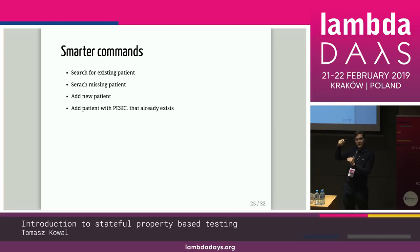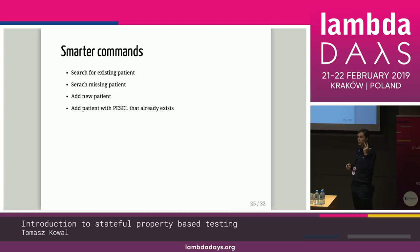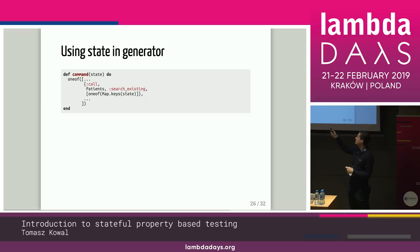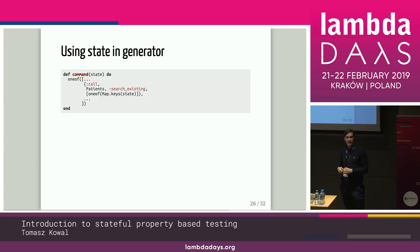There are tricks to make sure we actually test what we want with such a stateful system. We extend the commands: instead of just searching for any patient, we have one command for searching an existing patient and another for searching a patient that is missing from the database. Similarly with adding — we have adding a new patient and adding a patient with a PESEL that already exists. For searching an existing patient, instead of generating a random PESEL, we use the state passed to the command function and say 'get me one of the keys in the state' — that's sufficient to select only existing patients.